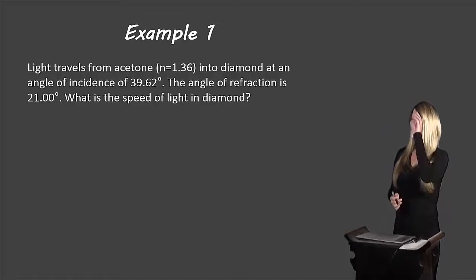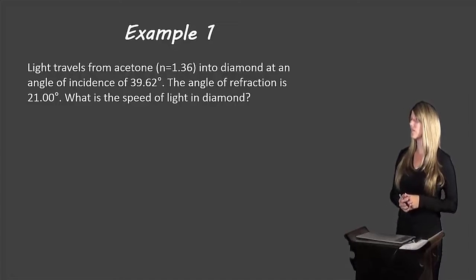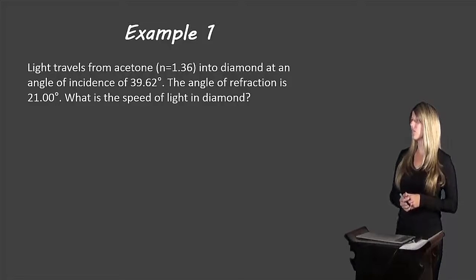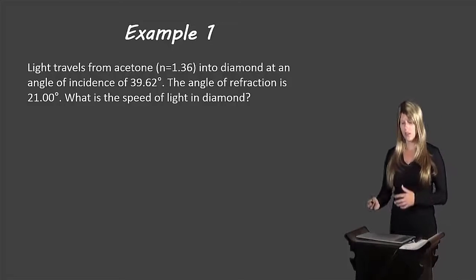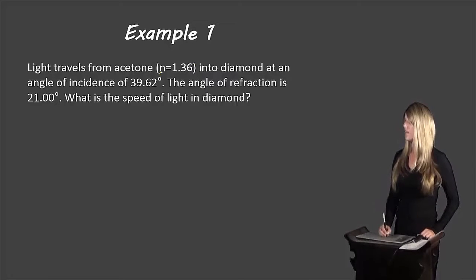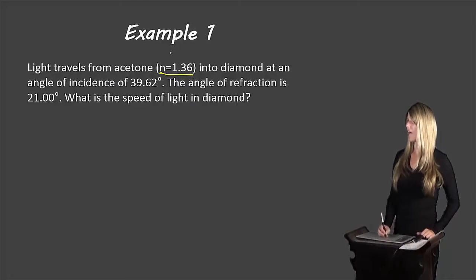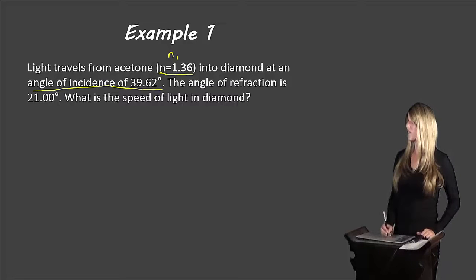Light travels from acetone, which has an index of refraction of 1.36, into diamond at an angle of incidence of 39.62 degrees. The angle of refraction is 21.00 degrees. What is the speed of light in diamond?